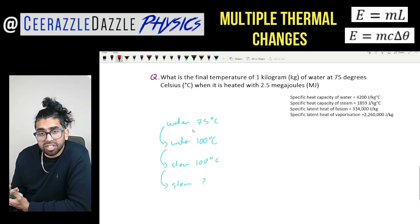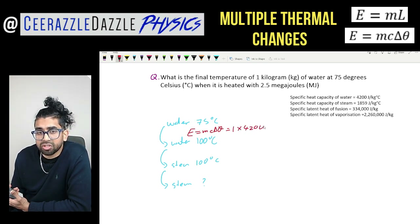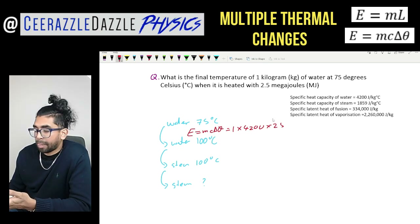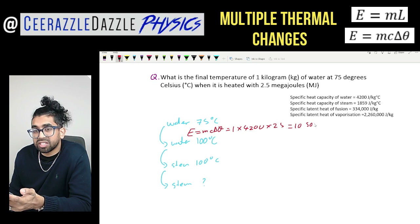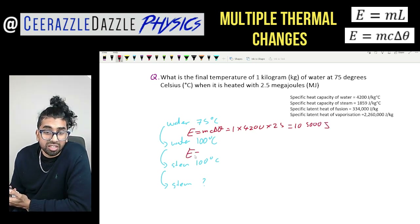For stage one, the energy needed is E = mc∆θ: mass is 1 kg, specific heat capacity of water is 4200 J/kg°C, and the temperature change is 25 degrees (75 to 100°C). That gives 1 × 4200 × 25 = 10,500 joules.